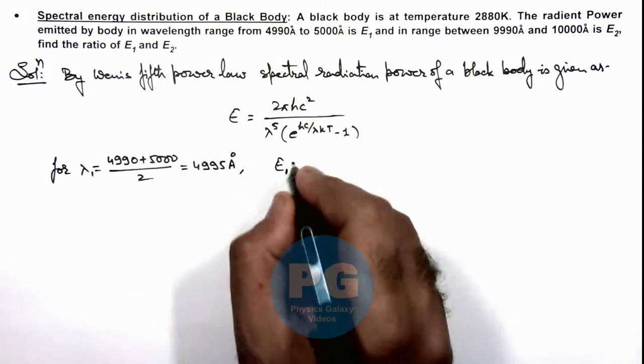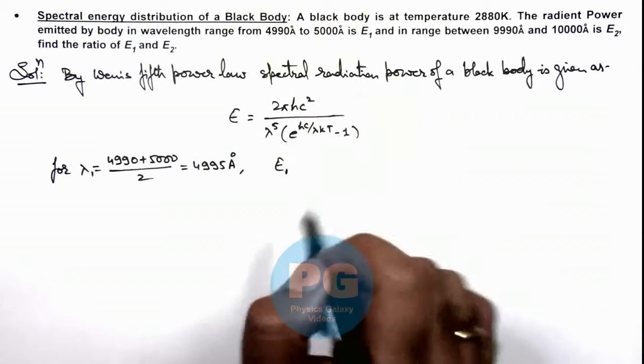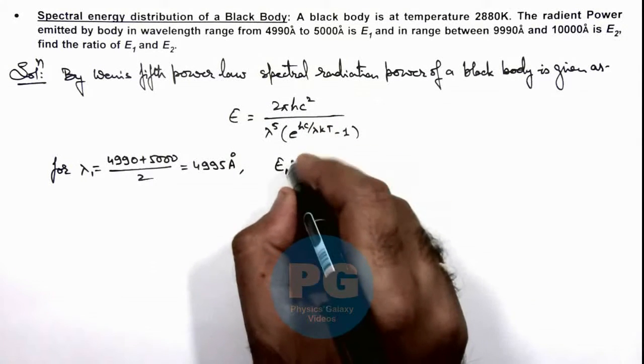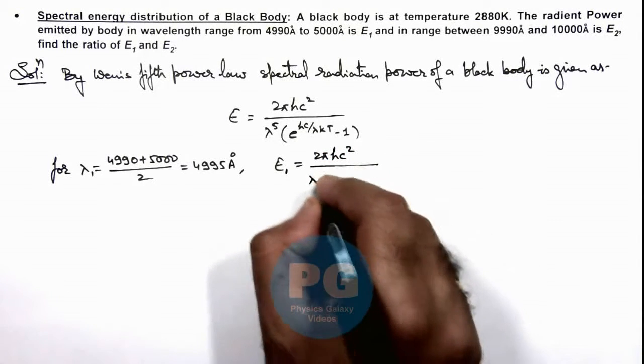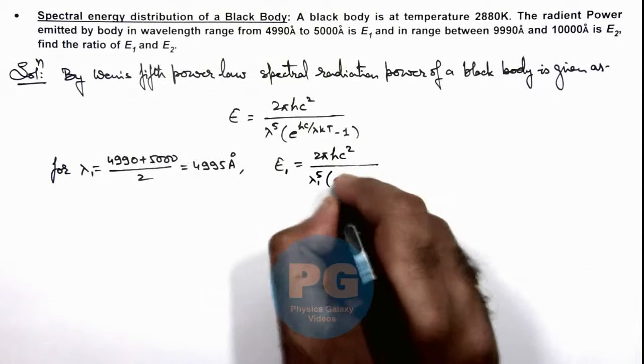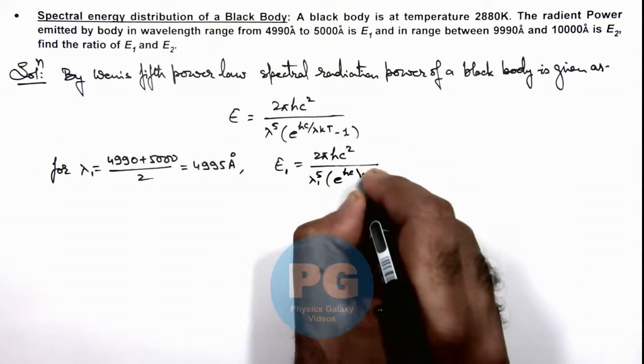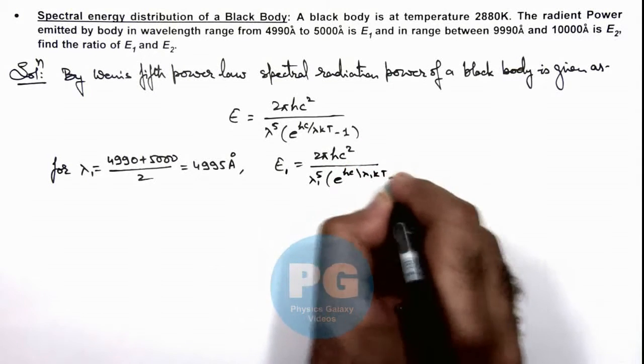Per unit of wavelength range can be given as E1, which is 2πhc² divided by λ1 to the power 5, multiplied by e to the power hc by λ1kT minus 1.